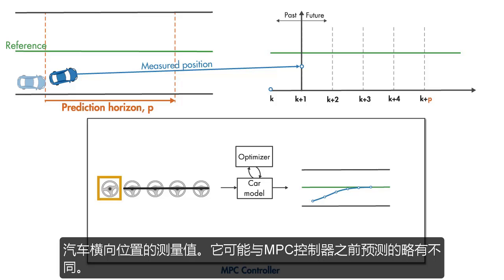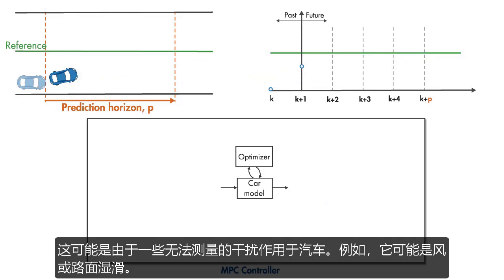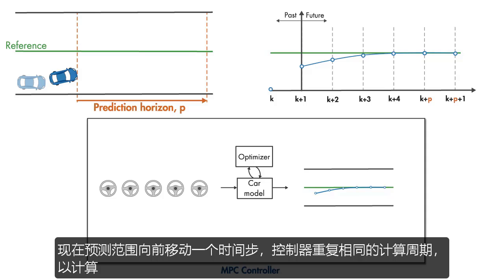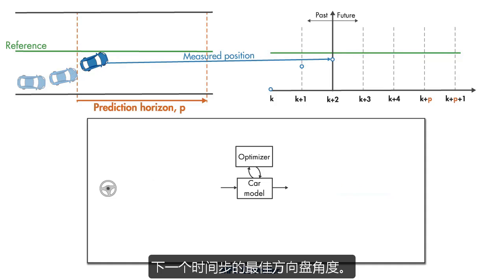It might be slightly different than what the MPC controller has predicted before. This could be due to some unmeasured disturbance acting on the car. For example, it might be the wind or slippery road surface. Now the prediction horizon shifts forward by one time step and the controller repeats the same cycle of calculations to compute the optimal steering wheel angle for the next time step.